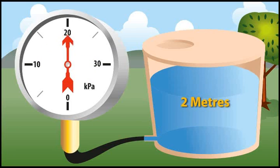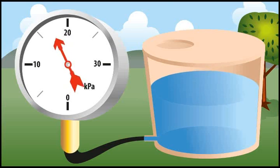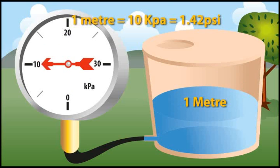One meter of head is equal to 10 kPa. KPa, meter of head, and PSI are all units of pressure.